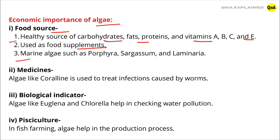Medicines: Algae like Coraline is used to treat infections caused by worms. Biological Indicator: Algae like Euglena and Chlorella help in checking water pollution.